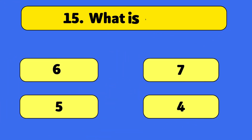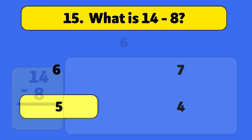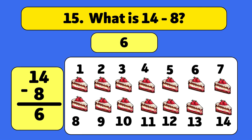What is 14 minus 8? The answer is 6. We start with 14 cakes and take away 8. Let's count: 1, 2, 3, 4, 5, 6, 7, 8. We have 6 cakes left.